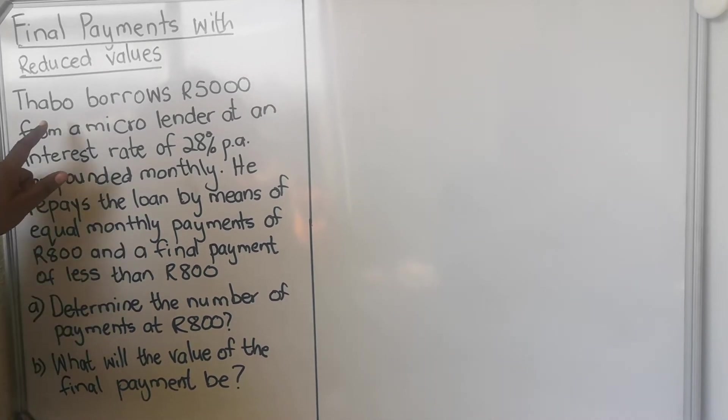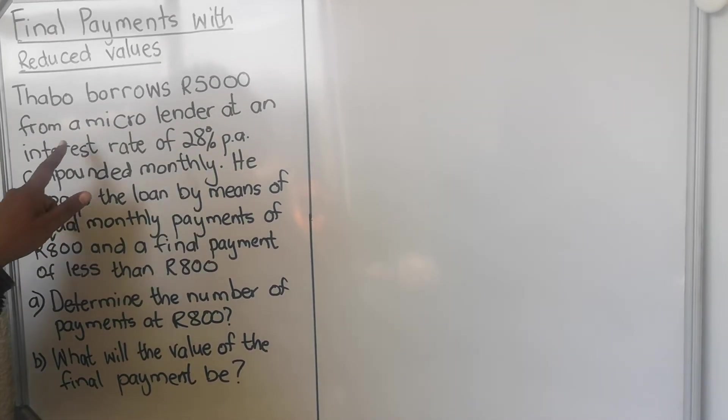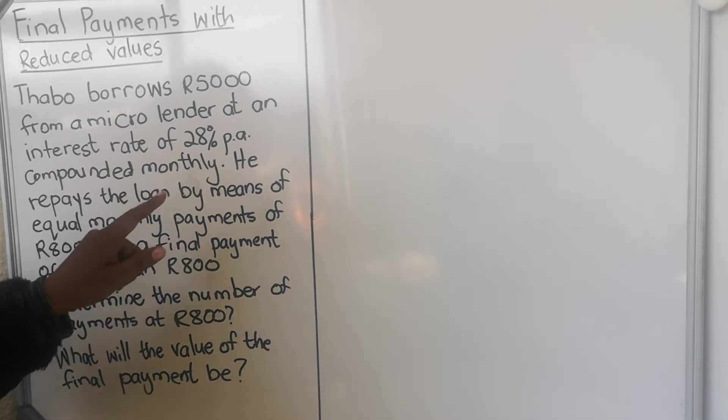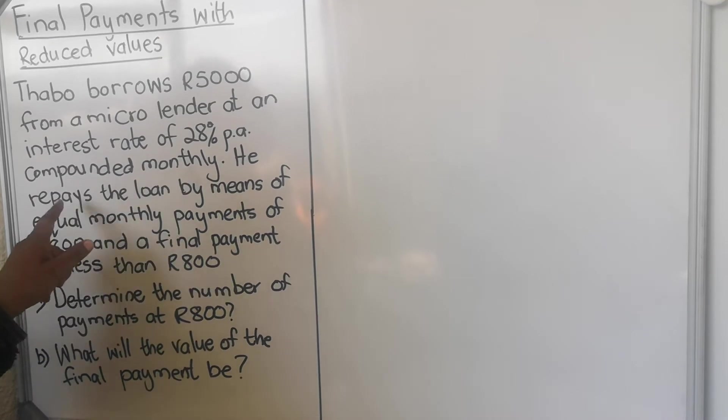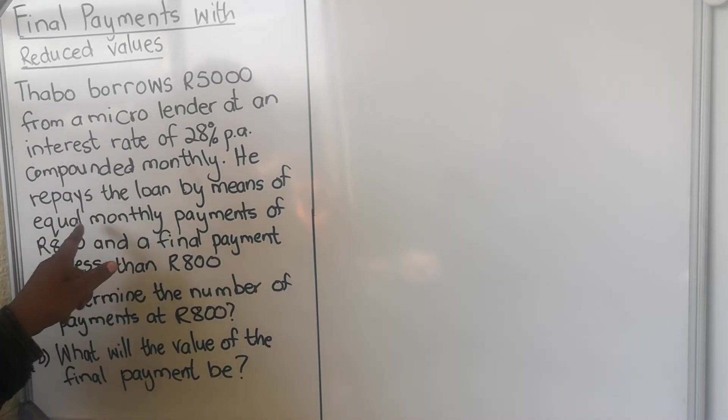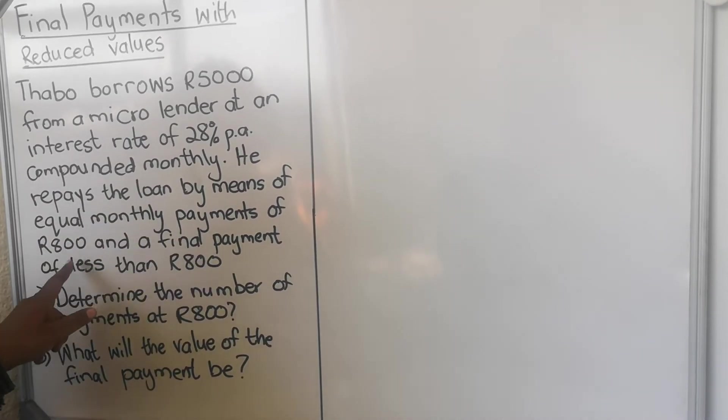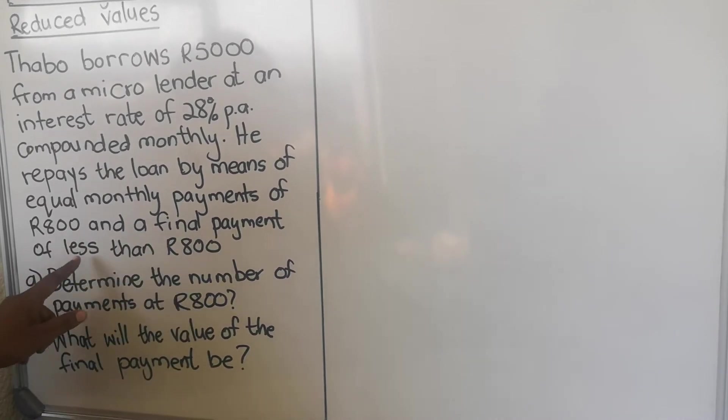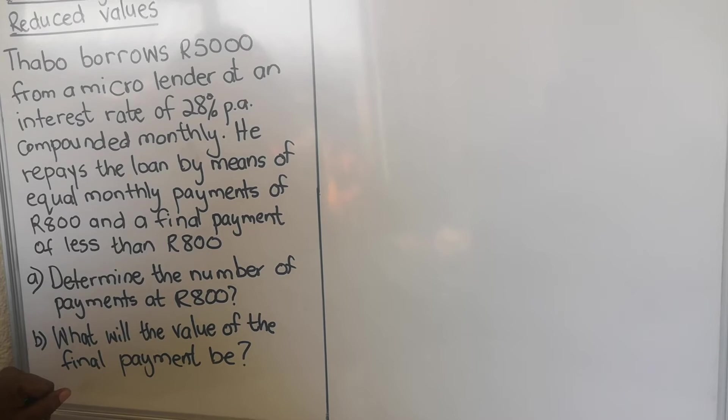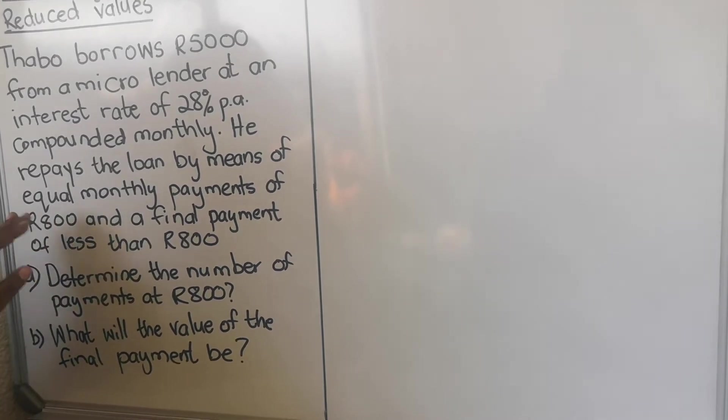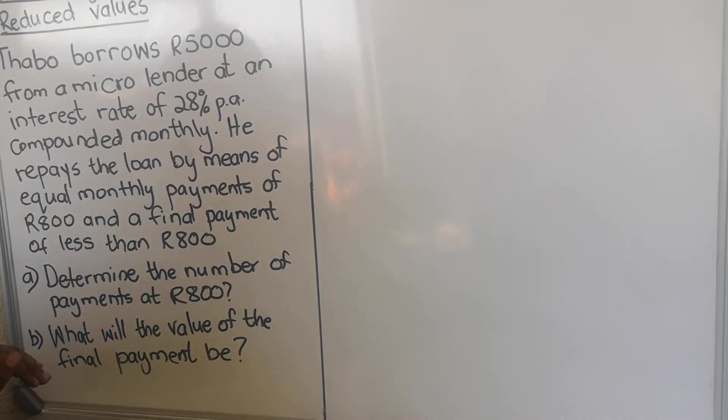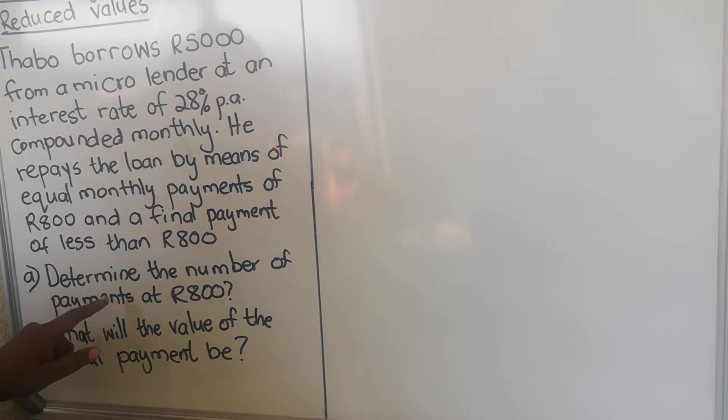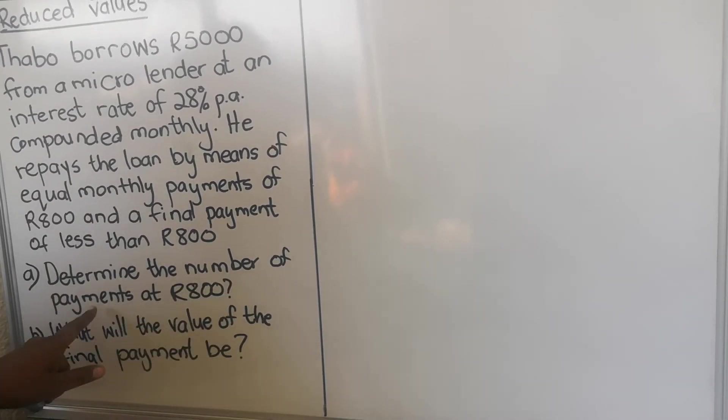Let's look at an example. Thabo borrows R5000 from a micro lender at an interest rate of 28% compounded monthly. He repays the loan by means of equal monthly payments of R800 and a final payment of less than R800. So he will pay back R800, and the last one will be less than R800.